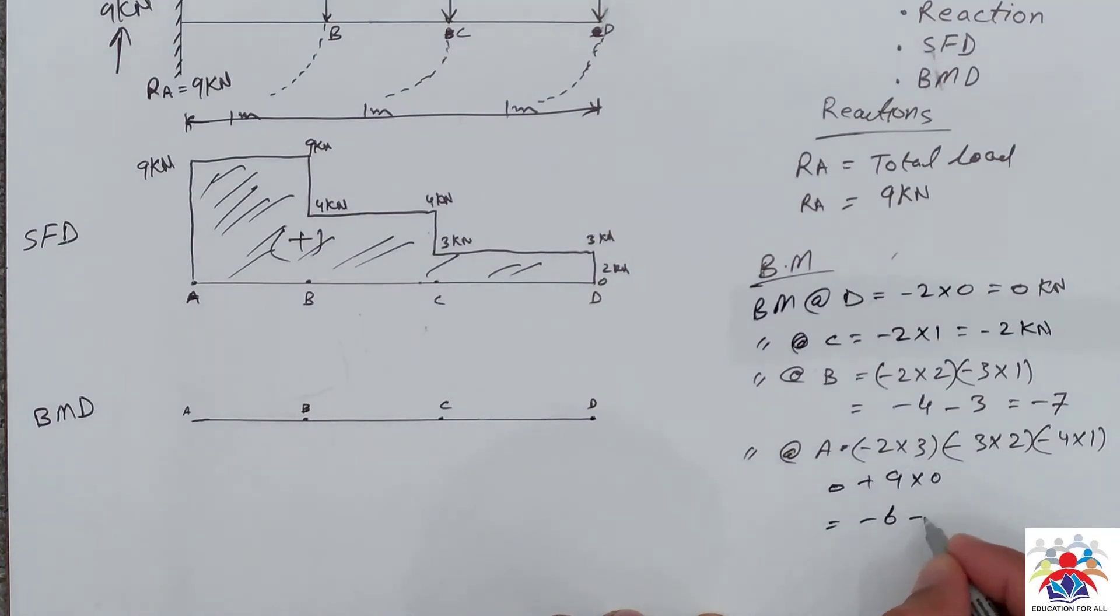Minus 6, then we have again minus 6 minus 4 plus 0, so we will get all 16 kilonewtons, 16 kilonewtons.